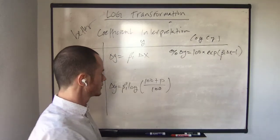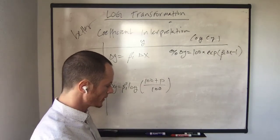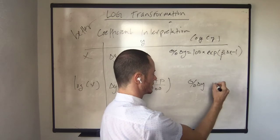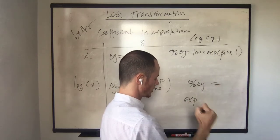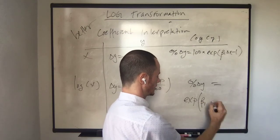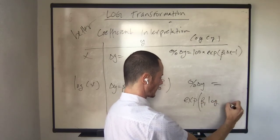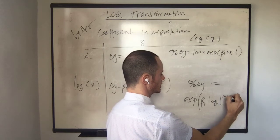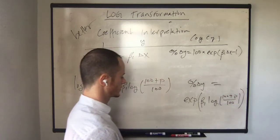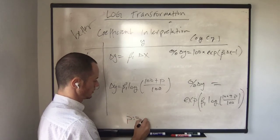And for the log log model, percent change in y is equal to e to the power of beta 1 times log of 100 plus p over 100, again where p is the percent change in x.